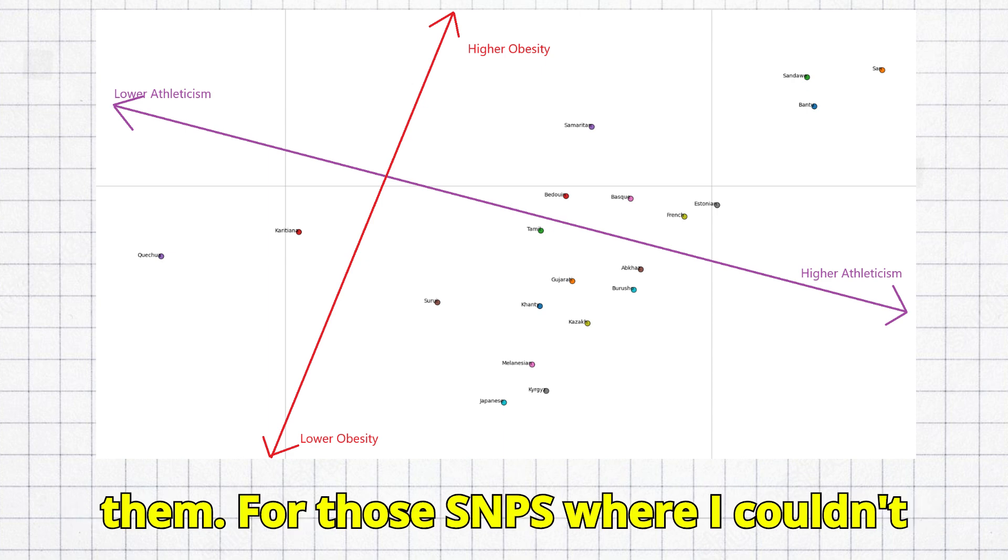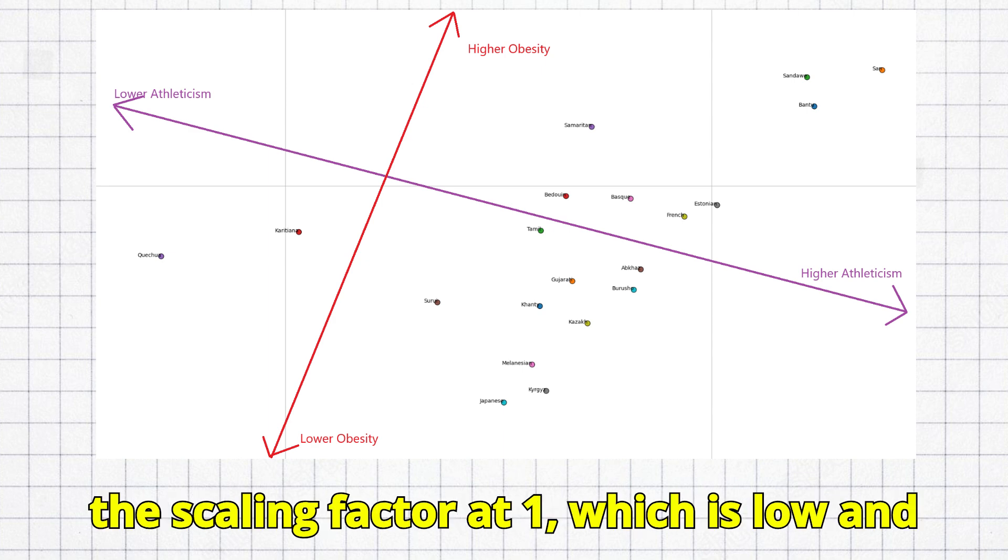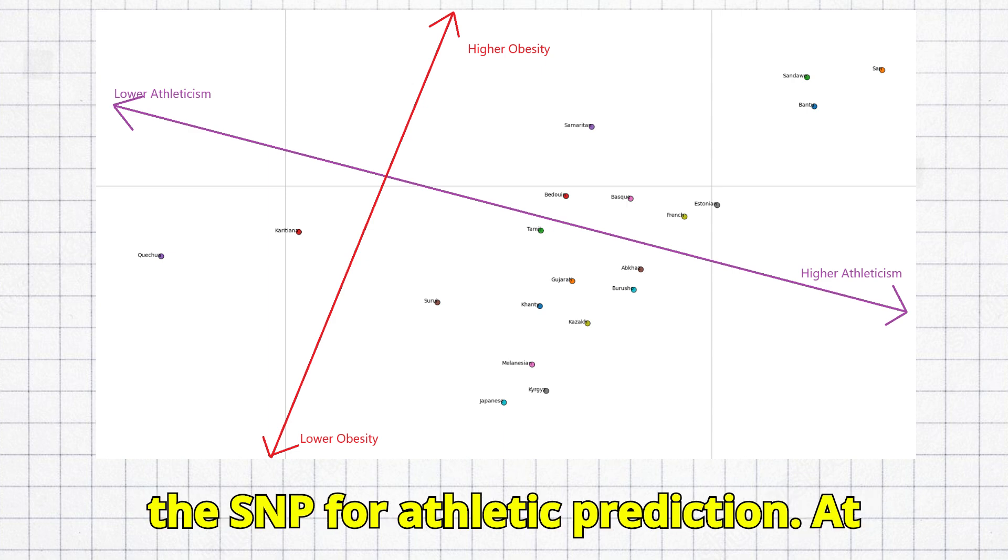For those SNPs where I couldn't find the odds ratio or magnitude, I left the scaling factor at 1, which is low and reflects the relative unreliability of the SNP for athletic prediction.